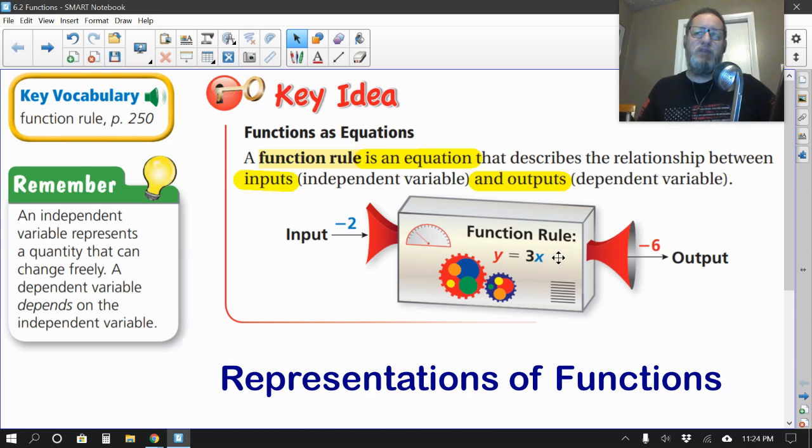So right here, one thing that pops up right away is what's called a function rule. A function rule you can see here is an equation that's describing the relationship between inputs, they have their little function machine, an input, a number that's put in, which is called the independent variable, and then the output number that you get afterwards. So in this case, the equation for this function rule was y equals 3x. So 3 times negative 2 is negative 6.